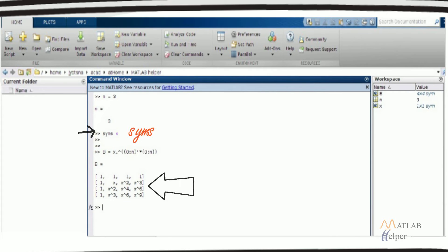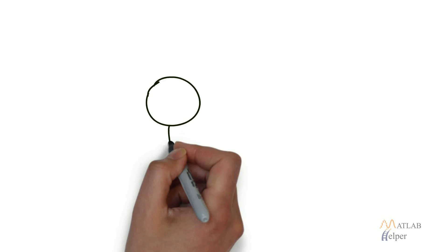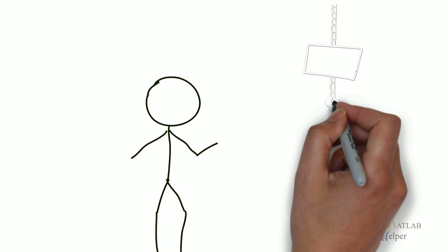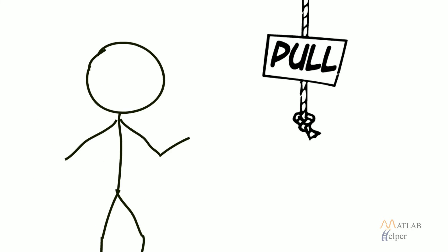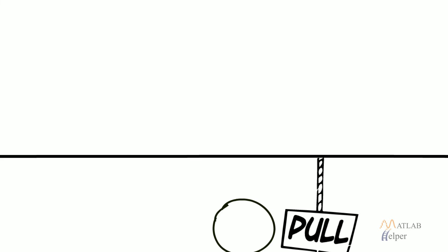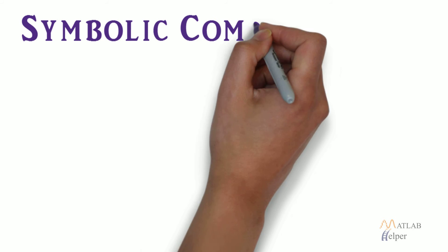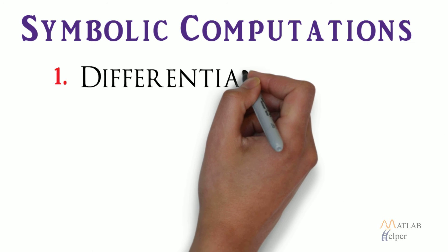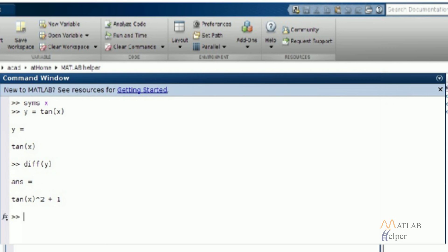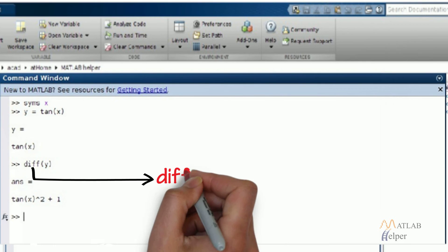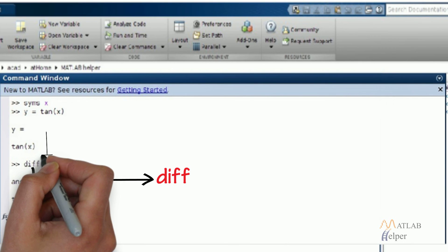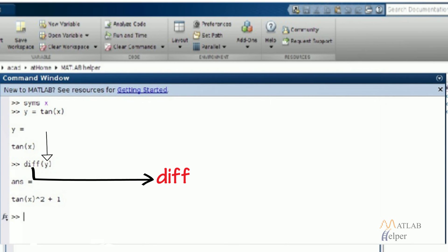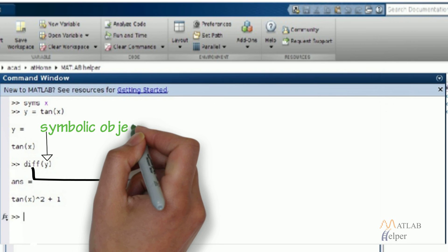Most important usage of symbolic operations is the ability to perform complicated calculations and get closed form notations. First one under symbolic computation is differentiation. Differentiation of the symbolic expressions or functions is quite straightforward. It just uses the command diff which encloses the name of the symbolic object as shown in the picture.